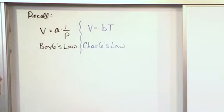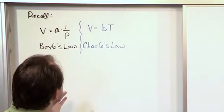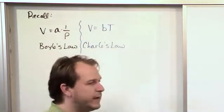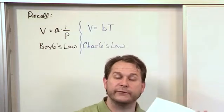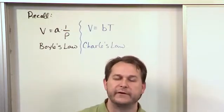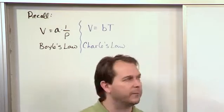V is equal to some constant b times T, and we call this one Charles's law. Again, we never really found what the constant b was because it wasn't necessary. We reformulated this into a before and after, going from state 1 to state 2, and we found a very useful form of the equation in that form.